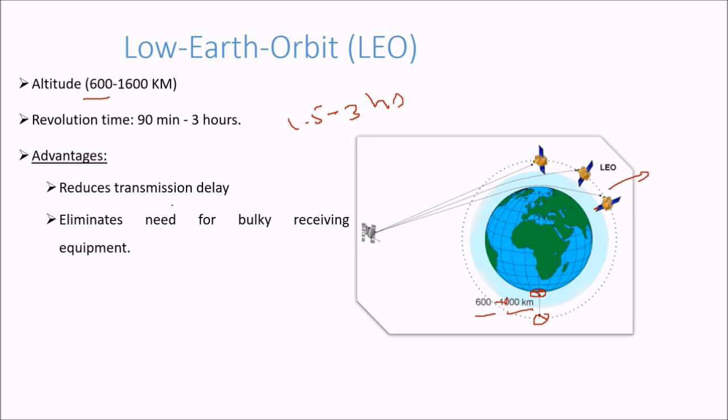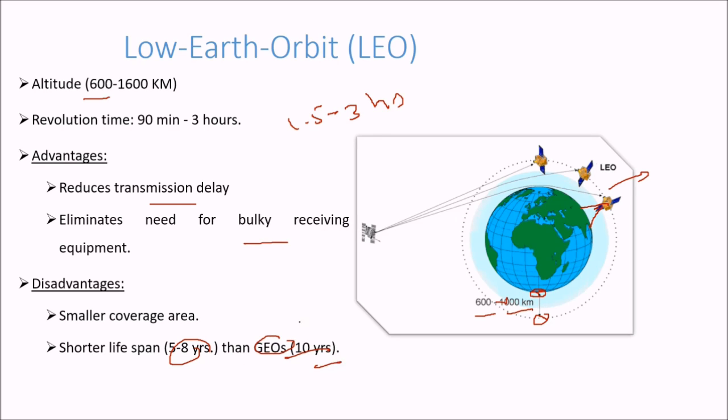The advantage is it reduces transmission delay because the distance is very less, and eliminates the need for bulky receiving equipment. Small antennas will also do. But the problem is the smallest coverage area, because it is at this distance, so the coverage area can be like this only. And shorter lifespan, say 5 to 8 years. If we compare it with GEOs, it is around 10 years.